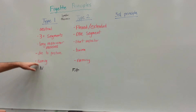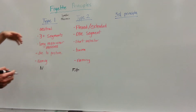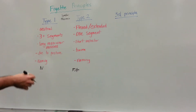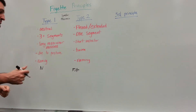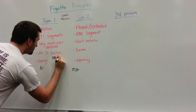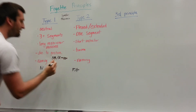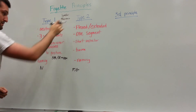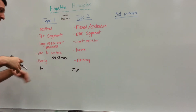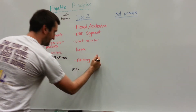One thing to point out regarding naming: type 1s are always named opposite in side bending and rotation — so side bending and rotation are in opposite directions. For type 2s, side bending and rotation are named in the same direction.